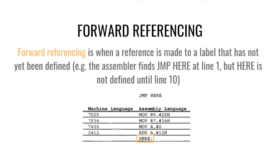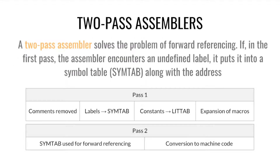One question that may come up when we look at labels is: what happens if we reference a label before we actually declare it somewhere in our program? This is a real issue called forward referencing. A two-pass assembler resolves this by putting these labels into something called a sym tab, keeping note of them, and then in the second pass using that sym tab to resolve those forward referencing issues.